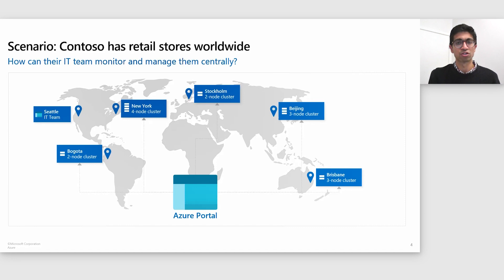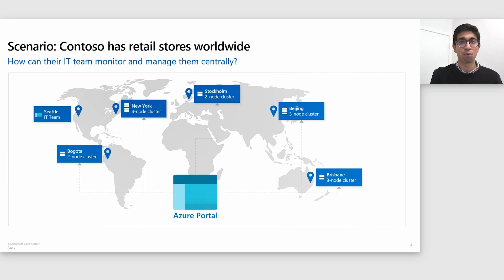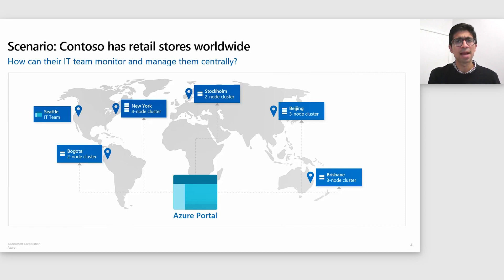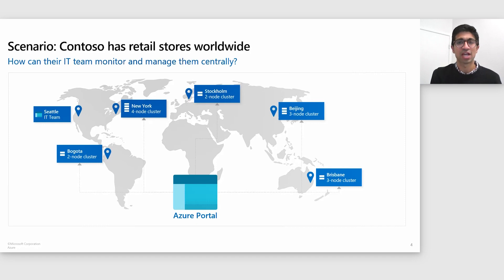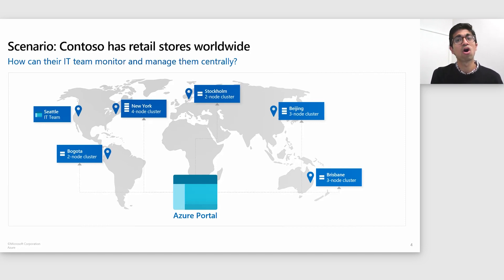Most of their infrastructure runs in the Azure public cloud, but there are a few applications that need to run on-premises. Being a retail store, they need their point-of-sale application and their video monitoring applications all running on-premises. Because these applications are critical to their daily sales, it's absolutely crucial that these applications have resiliency and redundancy. Therefore, Contoso has deployed either two, three, or four node Azure Stack HCI clusters in all of their stores.